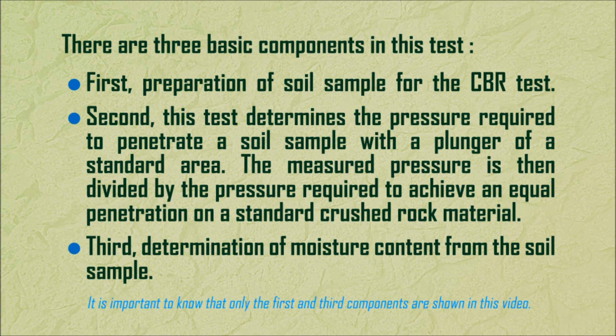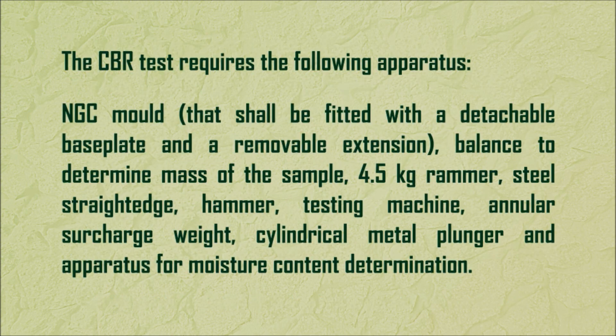It is important to know that only the first and third components are shown in this video. The CBR test requires the following apparatus: NGC mold, that shall be fitted with a detachable base plate and a removable extension; balance to determine mass of the sample; 4.5 kg rammer; steel straightedge; hammer; testing machine; annular surcharge weight; cylindrical metal plunger; and apparatus for moisture content determination.